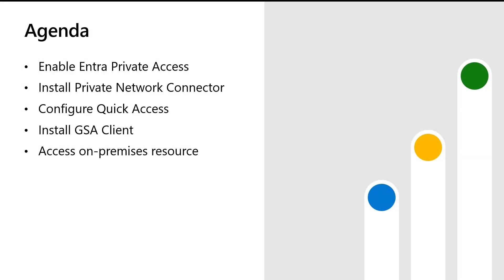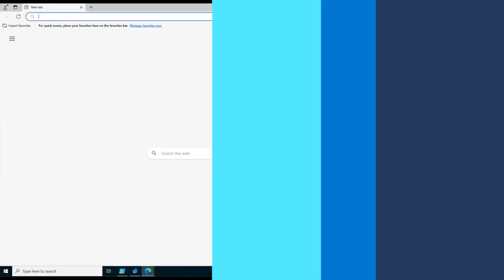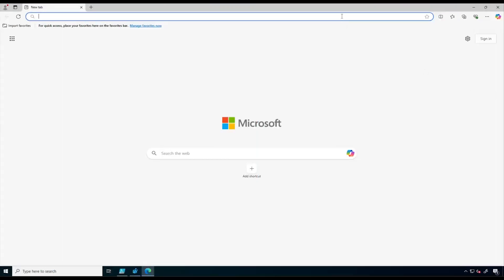First we will be enabling and configuring Intra Private Access, then we will be downloading and installing the Private Network Connector, next we will be configuring Quick Access as a VPN replacement, and finally we will be installing the Global Secure Access client and accessing an on-premises shared folder from a remote device.